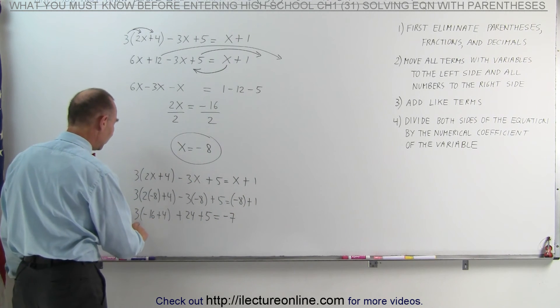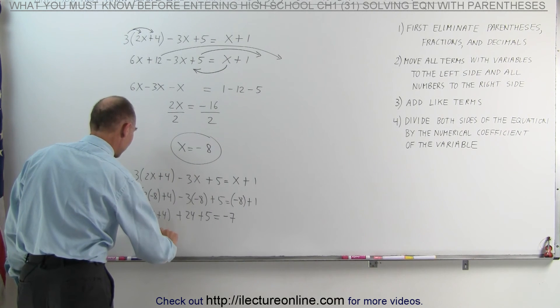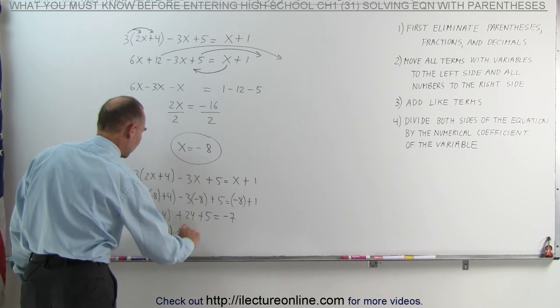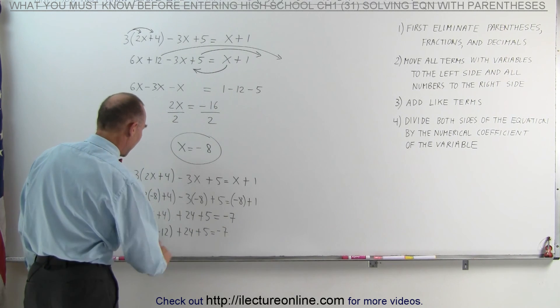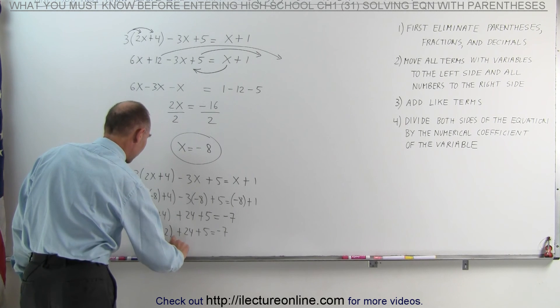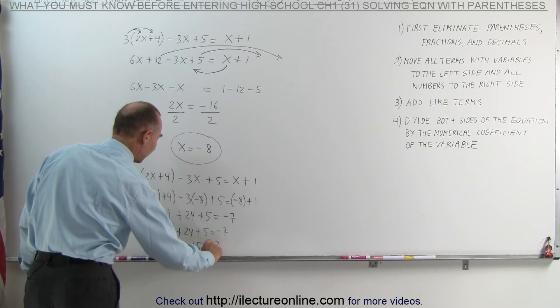Continuing to simplify this, negative 16 plus 4 is a negative 12. 3 times a negative 12 plus 24 plus 5 equals negative 7. And multiplying this together, we get negative 36 plus 24 plus 5 equals negative 7.